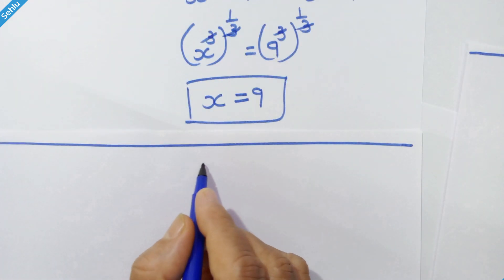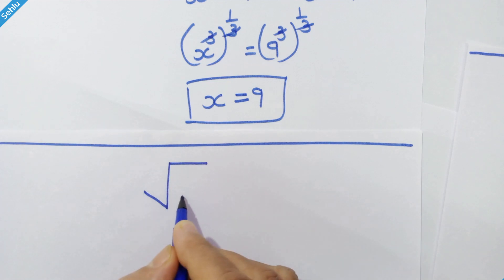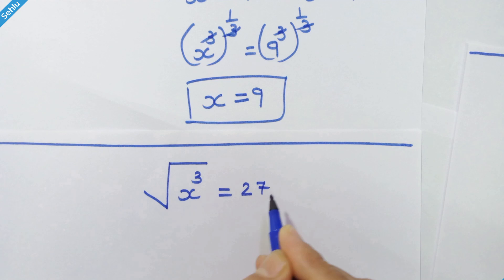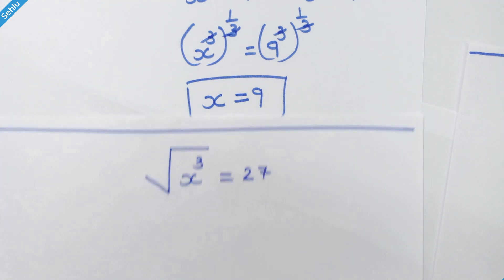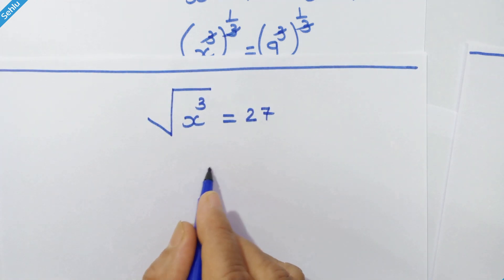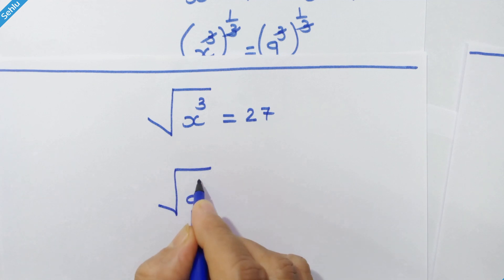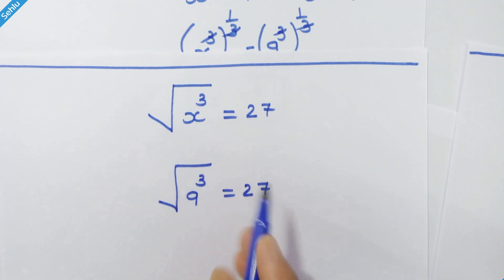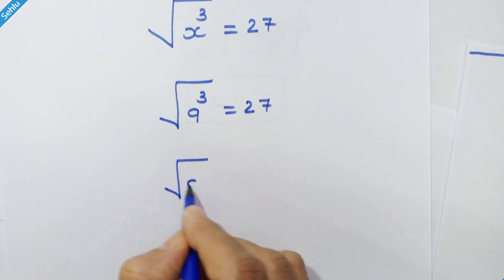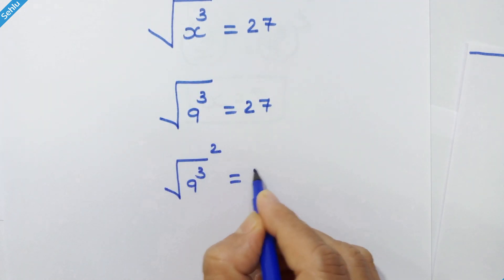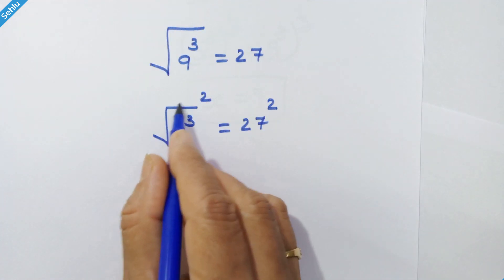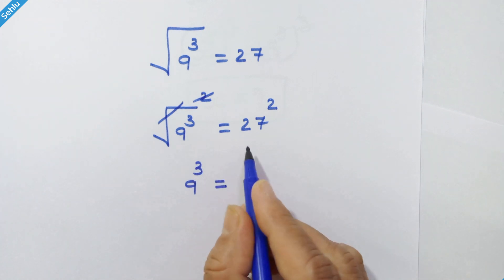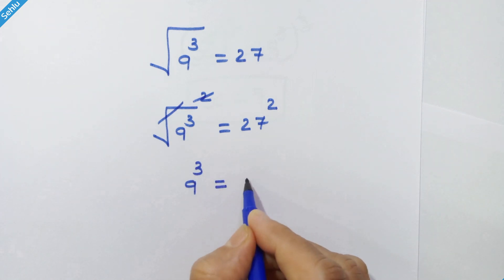Let's check it first. Our given equation is square root of x cube is equal to 27. Putting x is equal to 9, we have square root of 9 cube is equal to 27. Squaring both sides: square root of 9 cube whole squared is equal to 27 squared. This 2 will be cancelled, so 9 cube is equal to 27, which is 3 cube, so we can write it as 3 cube whole squared.